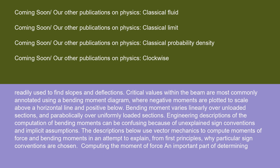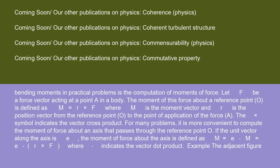Computing the moment of force is an important part of determining bending moments in practical problems. Let F be a force vector acting at point A in a body. The moment of this force about a reference point O is defined as M = r × F, where M is the moment vector and r is the position vector from the reference point O to the point of application of the force A. The × symbol indicates the vector cross product. For many problems, it is more convenient to compute the moment of force about an axis that passes through the reference point O. If the unit vector along the axis is e, the moment of force about the axis is defined as M = e · M = e · (r × F), where · indicates the vector dot product.